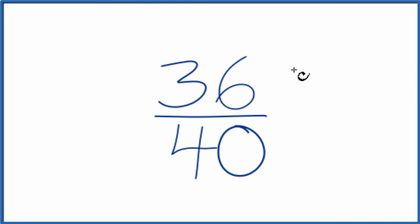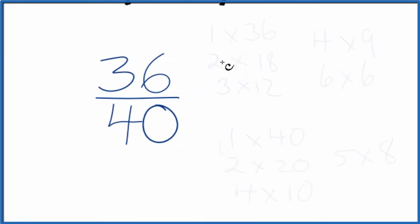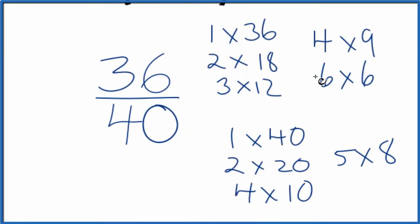To do that, we need to find a factor that goes into both 36 and 40. We're looking for the greatest common factor. So let's list the factors of 36 and 40. When we look at the factors of 36 and 40, we're looking for the greatest number, and it looks like 4. 4 is the greatest common factor for 36 and 40.